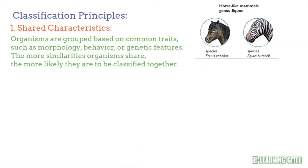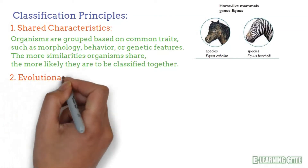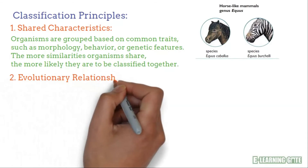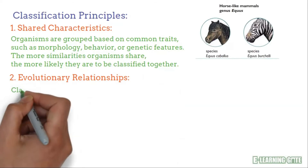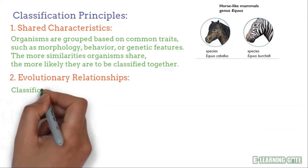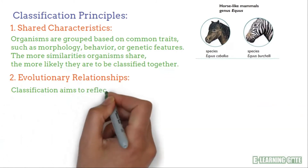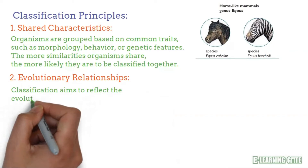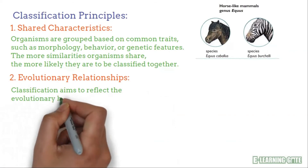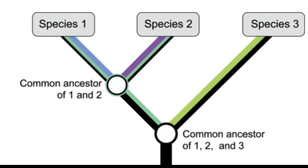The second principle of classification is evolutionary relationships. Classification aims to reflect the evolutionary history of organisms. Species that share a more recent common ancestor are classified more closely. For example, species 1 and 2 have recent common ancestors, while species 3 shared a common ancestor with both of them in the past.